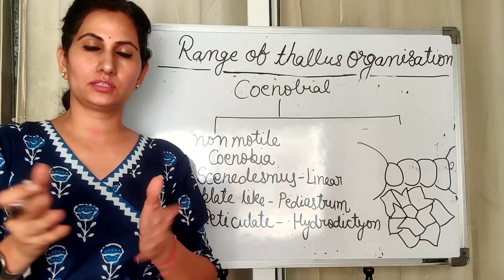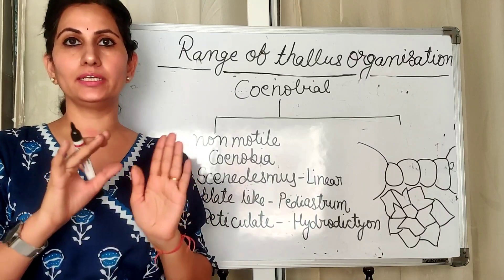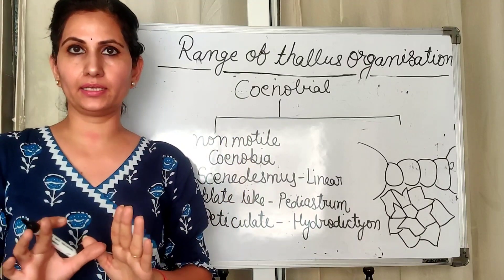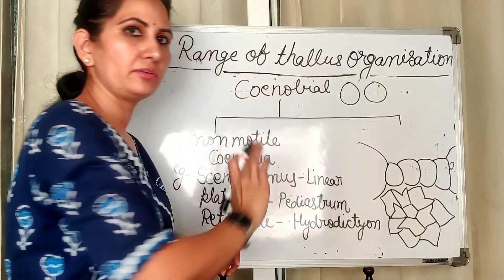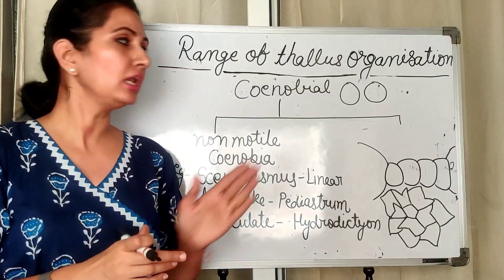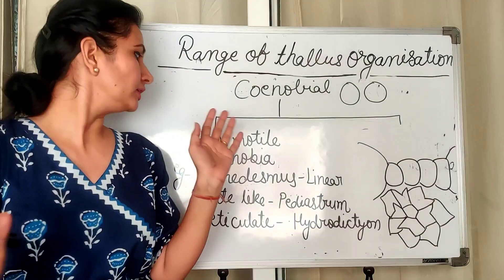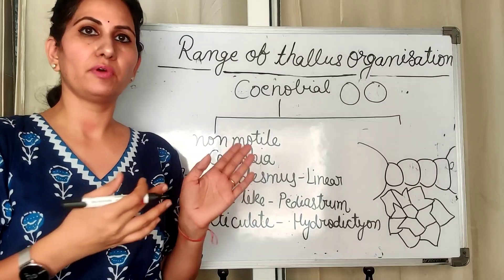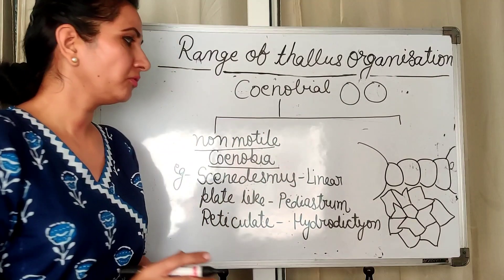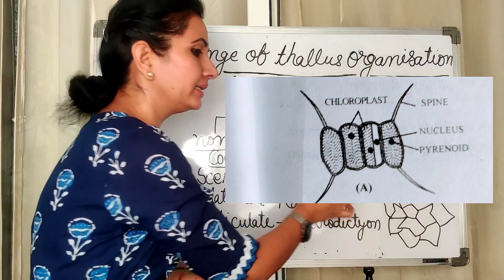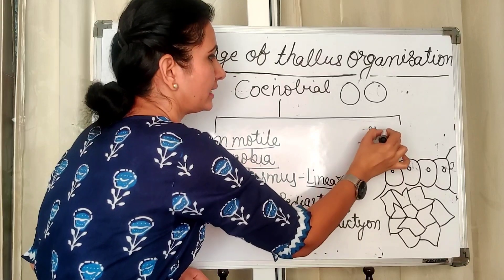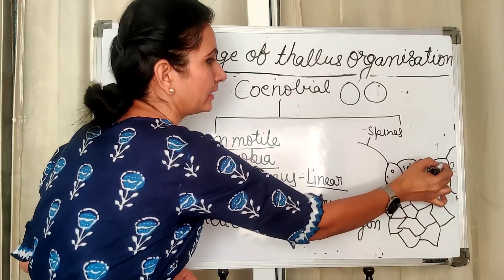Coenobial algae are colonial forms in which the number of individuals is determined, the shape of the colony is determined, and polarity is always present. Unlike aggregates where shape may differ, in coenobia the shape is the same across all individuals. Coenobia are of two types: motile and non-motile. For non-motile coenobia, Scenedesmus is an example — four to five cells are arranged linearly with spines, and each cell contains a chloroplast and nucleus.